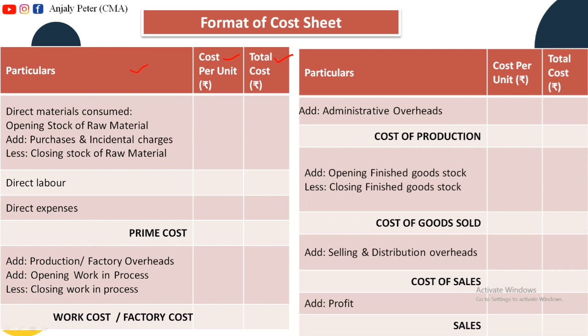The first item is Direct Material, which is calculated as: opening stock of raw material plus purchase of raw material plus incidental charges, minus closing stock of raw material — giving us Direct Material Consumed. Next item is Direct Labor, then Direct Expenses. Together these give us Prime Cost, to which we add Production Overhead, Opening Work in Progress, and subtract Closing Work in Progress.